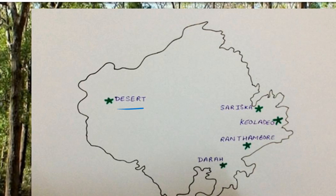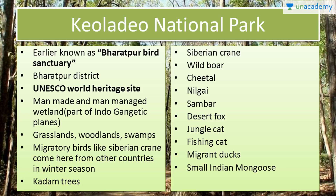Here we have Keoladeo National Park, which was earlier known as Bharatpur Bird Sanctuary, and lies in Bharatpur district of Rajasthan. It is one of UNESCO's World Heritage Sites and is a man-made and man-managed wetland. You will find here grasslands, woodlands and swamplands. Every year during winters, migratory birds like the Siberian Crane come here. You will find here Kadam trees. Animal species include wild boar, cheetal, nilgai, sambar, desert fox, jungle cat, fishing cat, migratory ducks and small Indian mongoose.